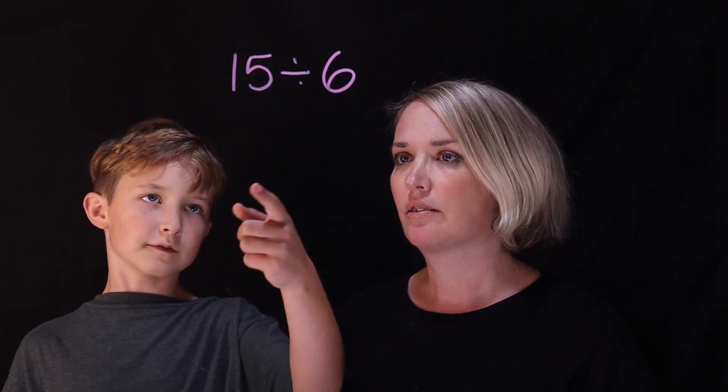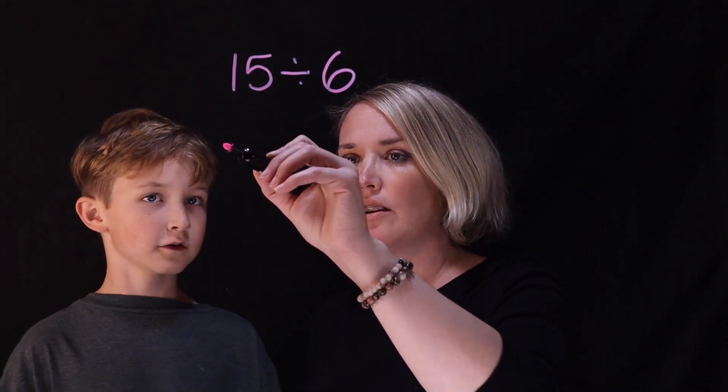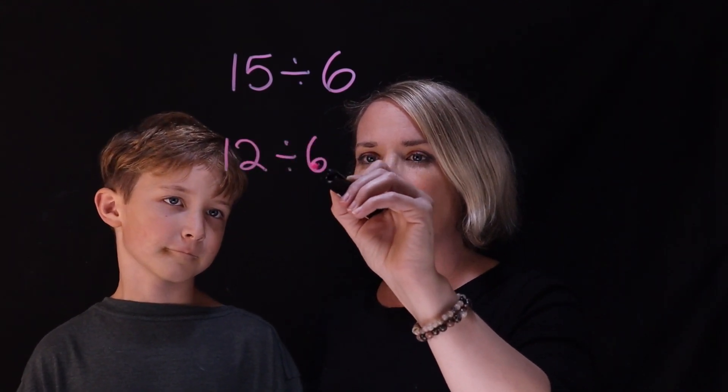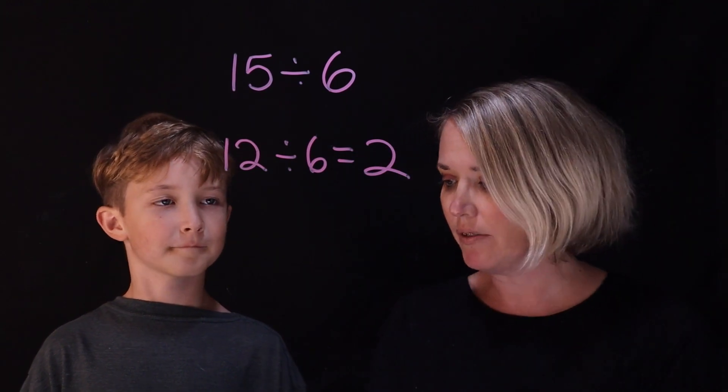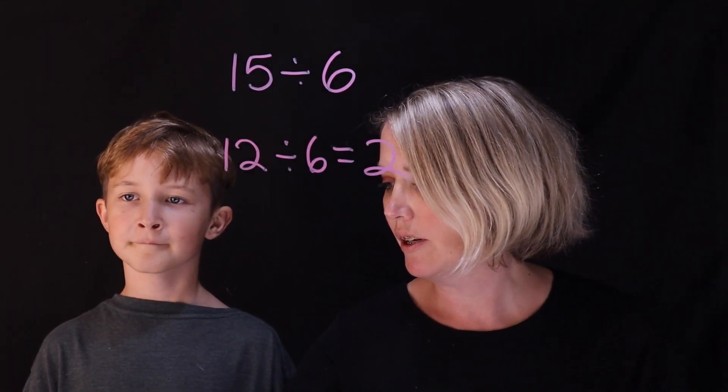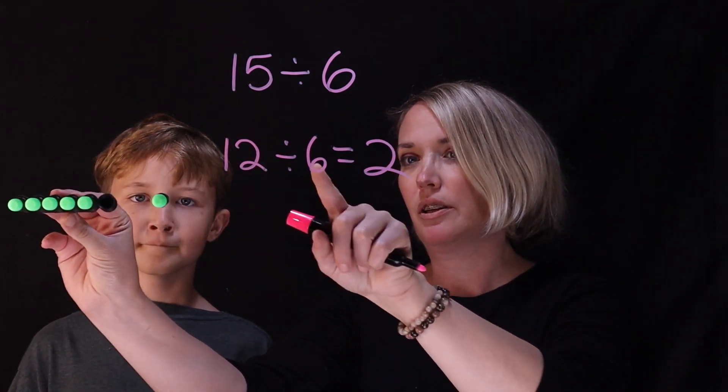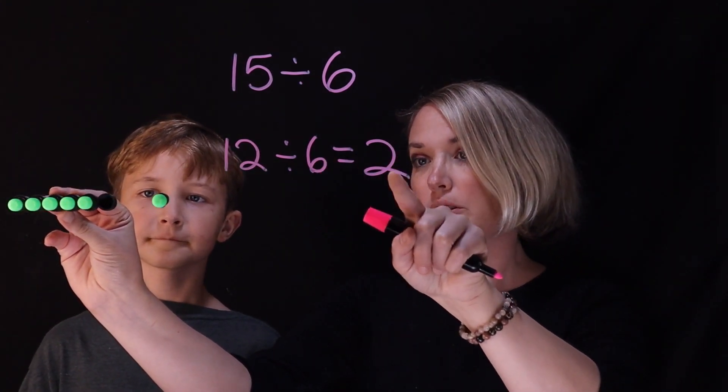Well, first I know that 12 divided by 6 is 2. Oh, okay. So 12 divided by 6 equals 2. So let's bring stuff out so that people can see this. So, we'll bring out, so basically, this also tells us that 6 times 2 equals 12, right?